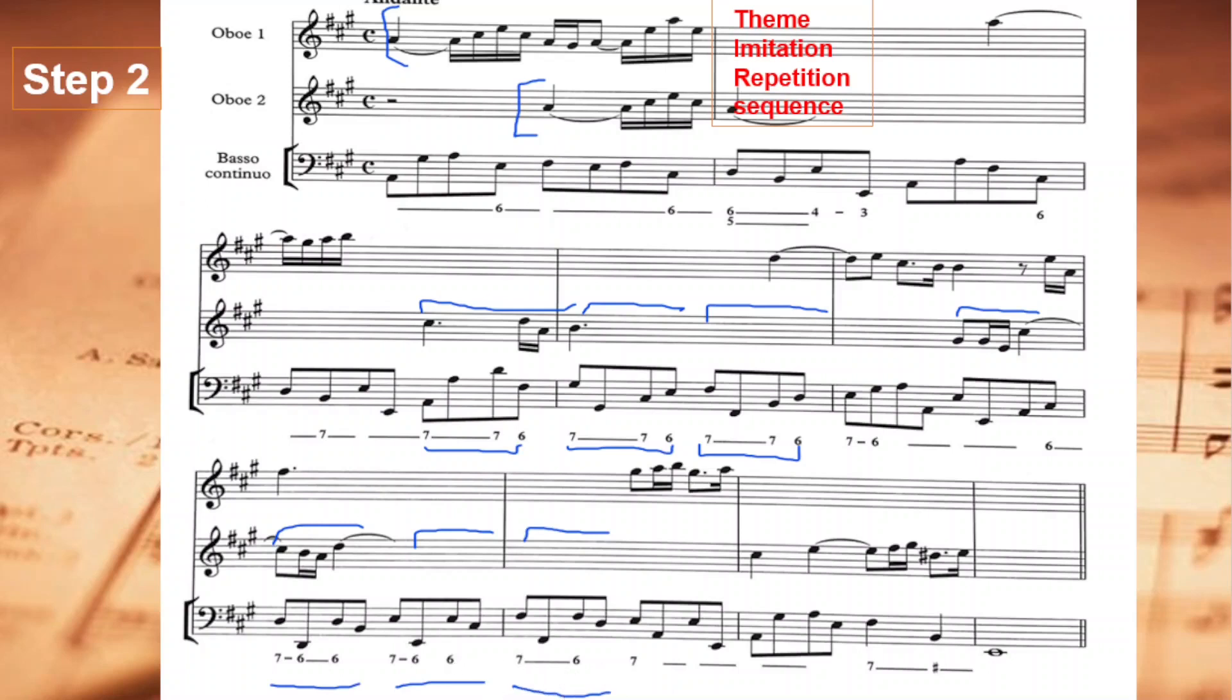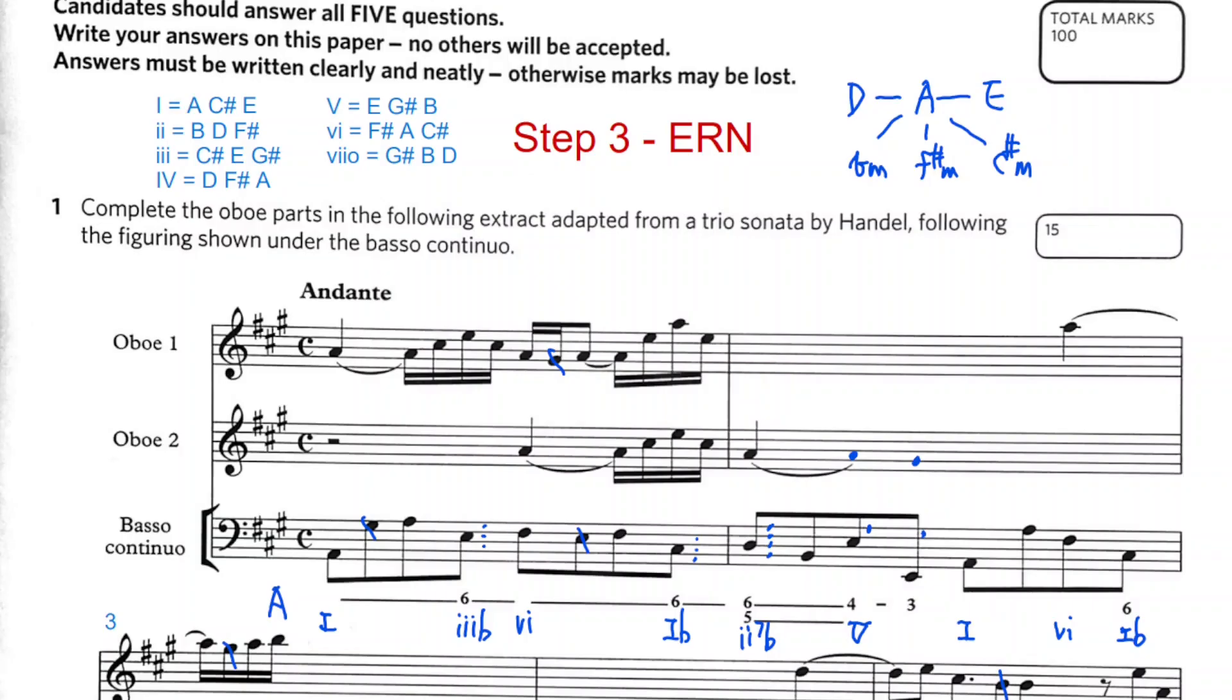Now, let's go to step 3. In step 3, we are to write out the extended Roman numerals. This will help us understand the relations of chord progressions.